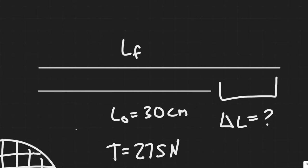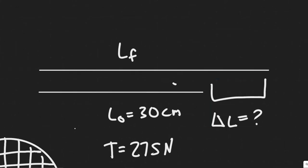And then we know it's going to have some final length when the tension's on it. And what we're trying to find is the difference in this length, how much is it lengthened from this. So essentially, we're trying to find delta L.